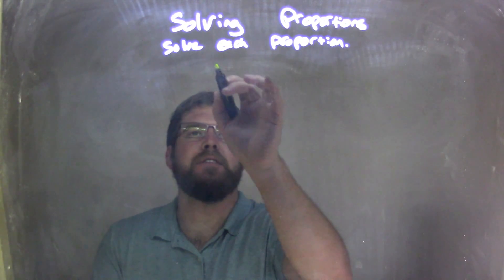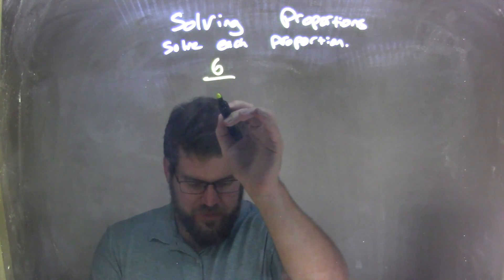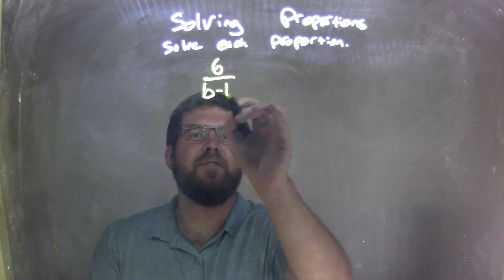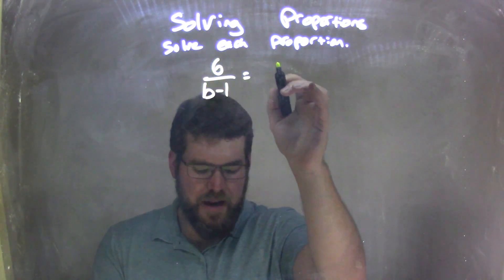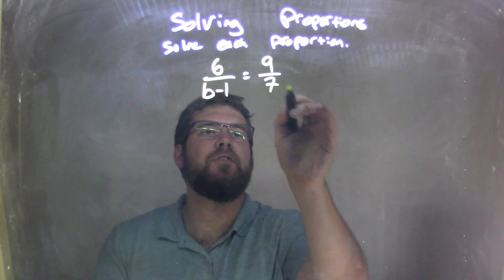So if I was given this proportion, 6 over b minus 1 equals 9 over 7, okay?